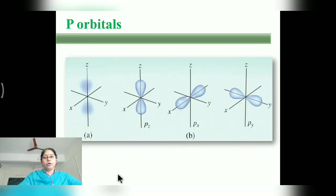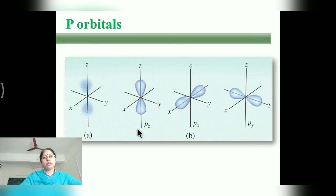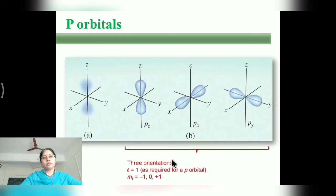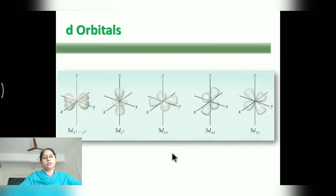If we look at the p-orbit, L equals 1, so the electron lies in the p sub-shell. For the p-orbit, the ml values are 3 possible values (−1, 0, +1), and that indicates orientation in 3 directions.